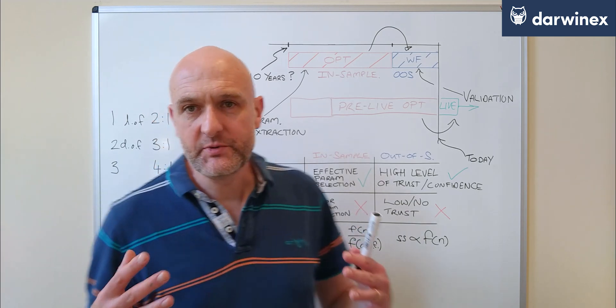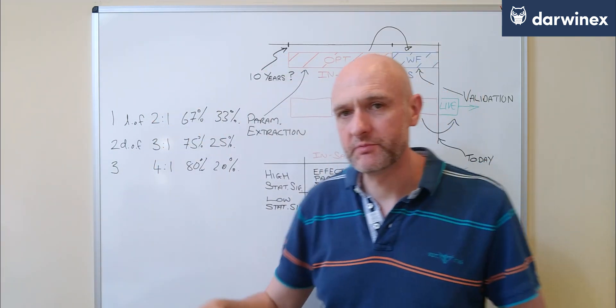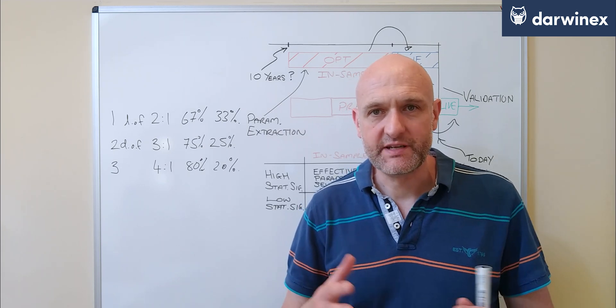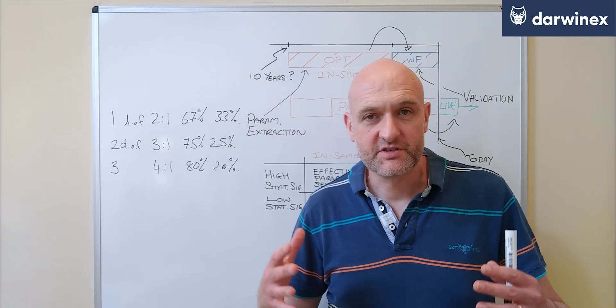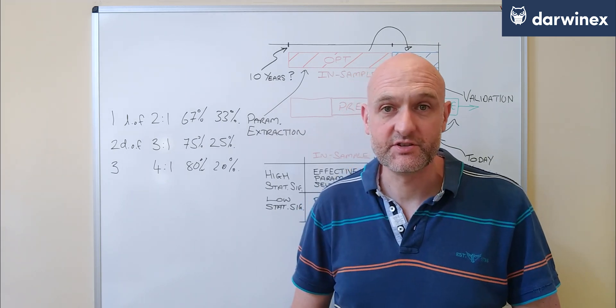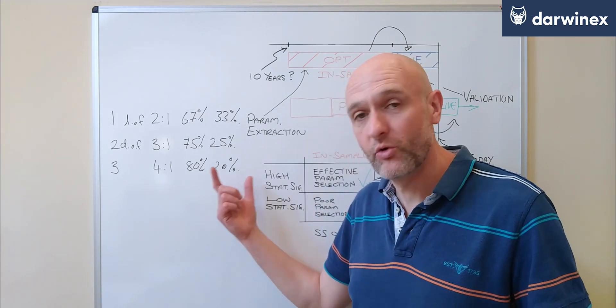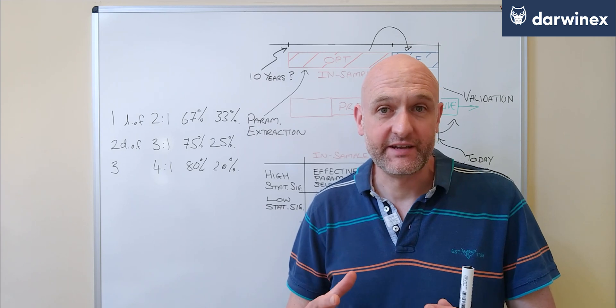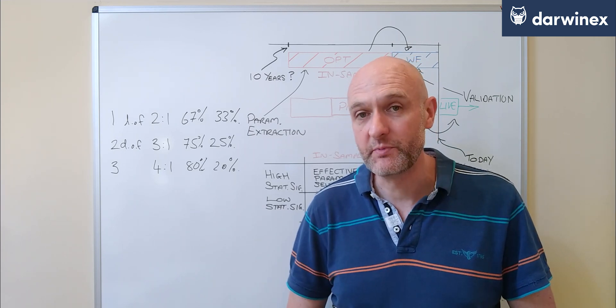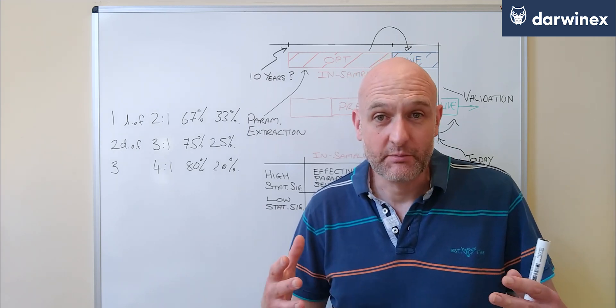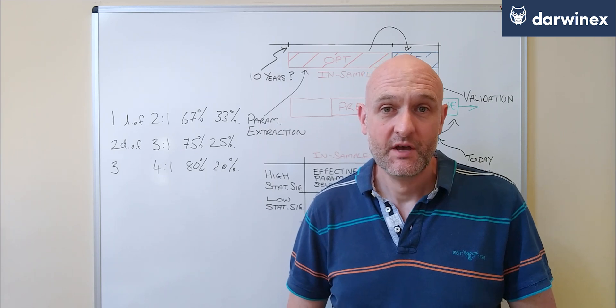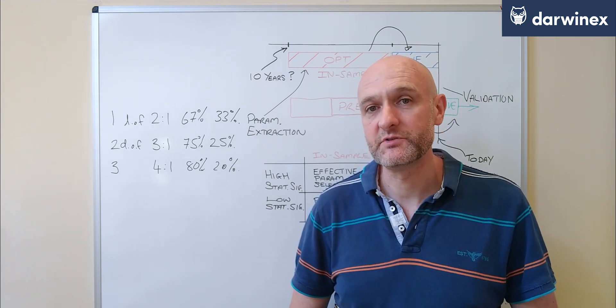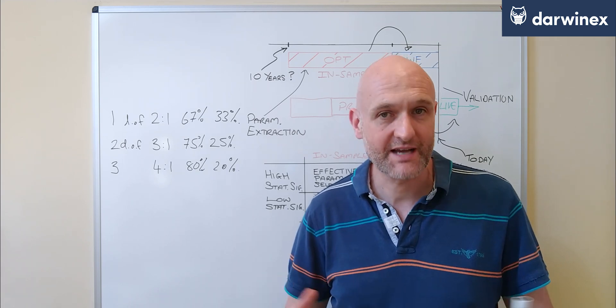Now, if you were to continue increasing the degrees of freedom, so optimizing more variables, then your out-of-sample phase would need to get bigger and bigger in order to sustain the statistical significance that you needed. And this would force the walk forward phase to shrink. And if it shrinks too much, then it doesn't serve any reasonable purpose any longer because you won't be able to trust the results in it. So as I've said before, I try to keep the number of parameters that I'm optimizing to either two or a maximum of three.